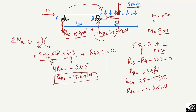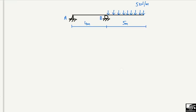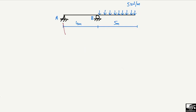There is no negative sign, so the assumed direction was right — RB is acting in the upward direction. Now to draw the shear force and bending moment diagram: the reaction at A is acting downward with magnitude 15.625 kilonewton, and the reaction at B is acting upward with magnitude 40.625 kilonewton.